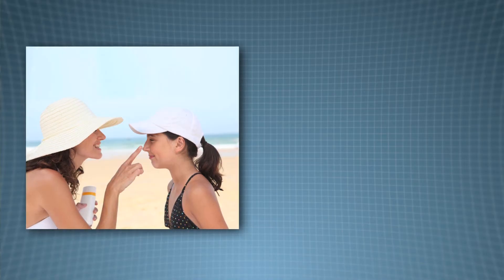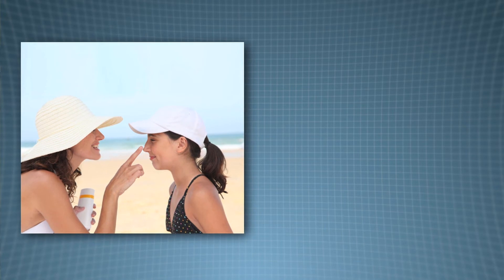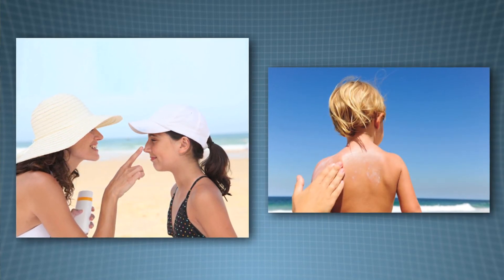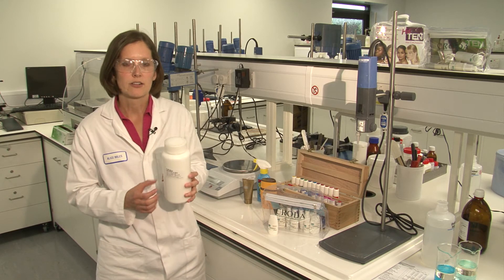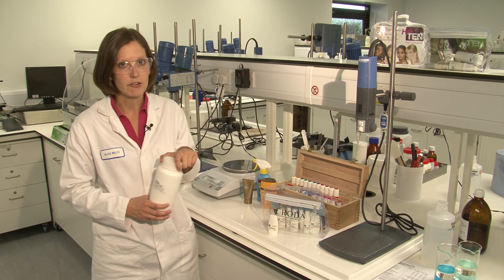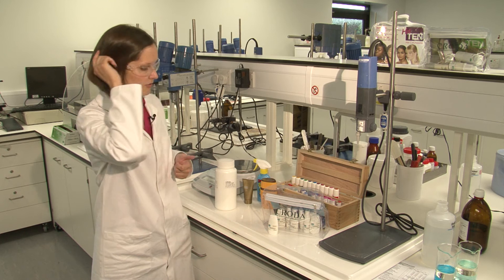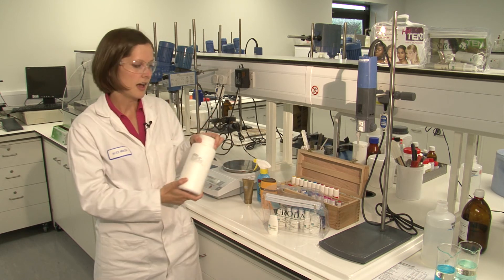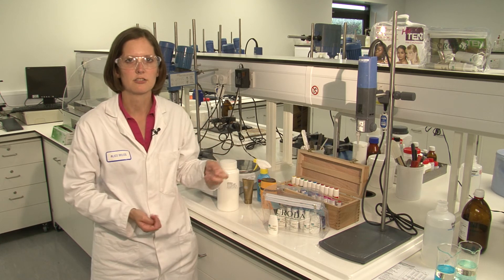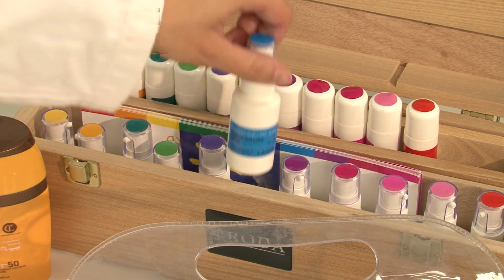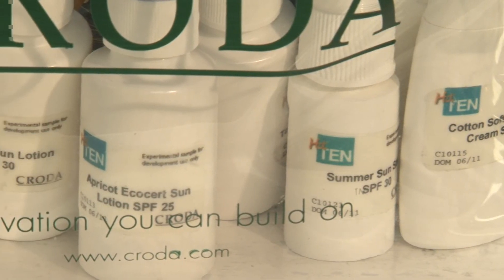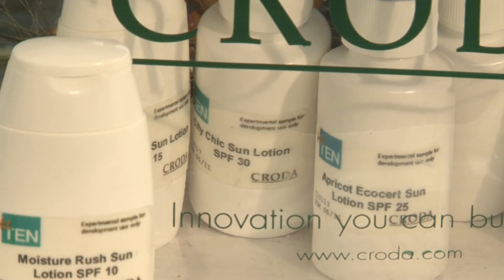So when we're developing sun lotions, as well as thinking about the level of protection against UVB and UVA, we also need to think about some other things. The lotion needs to be safe, so it needs to be non-irritant on the skin. It needs to be easy to apply — spreadable all over the body. It needs to be pleasant to apply, so a nice feeling on the skin and a nice fragrance perhaps. It's not just the performance of the sun cream; it needs to be nice to use as well. We sell our dispersion products to manufacturers of sun creams, and we make example demonstration lotions to show them what they can do — in different formats such as lotions, sprays, and gels.